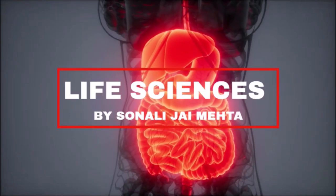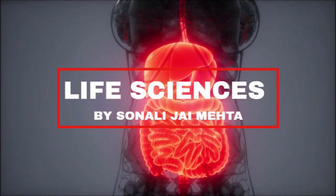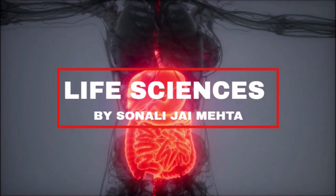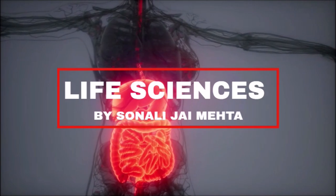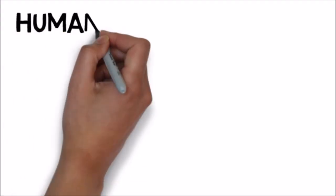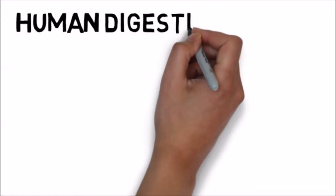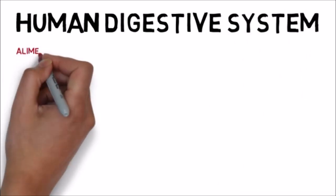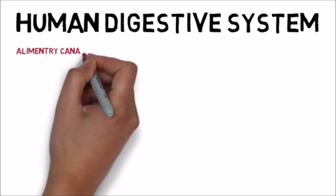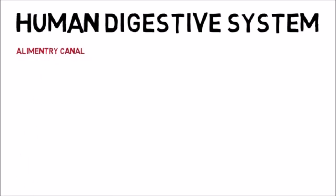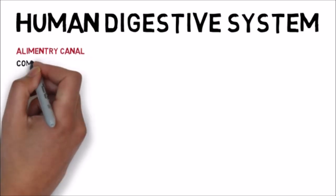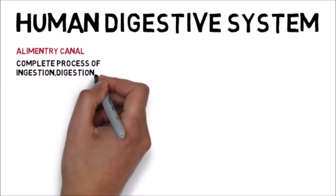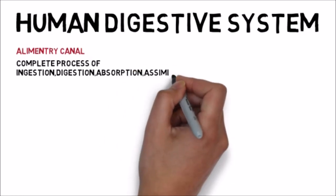Hello friends, in today's video we will discuss an interesting part of our body, the human digestive system. The human digestive system is made up of several organs which are collectively called the alimentary canal. In humans, this alimentary canal is about 7 to 8 meters long and is responsible for the complete process of ingestion, digestion, absorption, assimilation, and egestion.